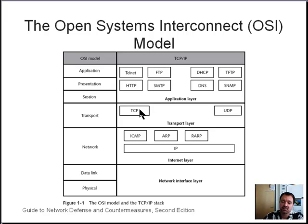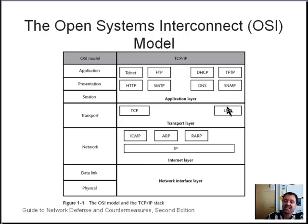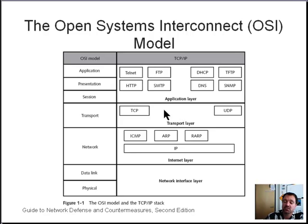TCP is connection-oriented — like making a telephone call — where you establish a connection between two points and then have a reliable sharing of information. UDP is connectionless, called a non-reliable protocol because data packets are sent from one station to another but there's no acknowledgment from the receiver that all packets were accepted in the correct order.